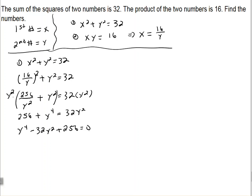And then let's factor. Looks like a perfect square there. 16 times 16 is 256. Negative 16 times negative 16 is 256. And negative 16 plus negative 16 is negative 32.